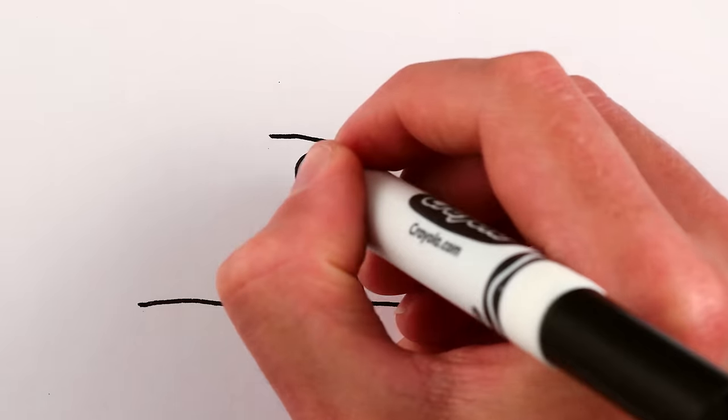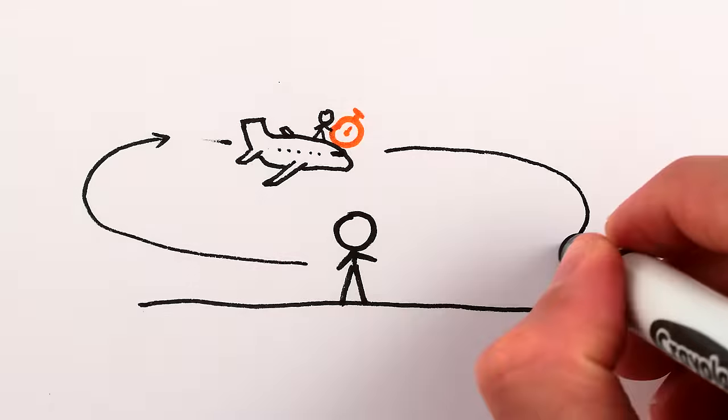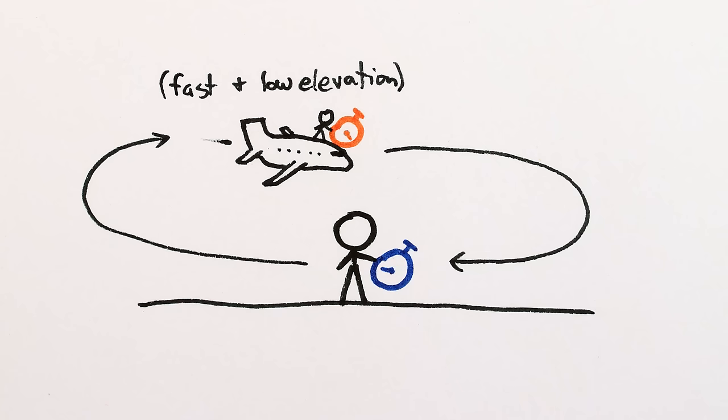And indeed, this is exactly what happens when you send an atomic clock flying around in an airplane. It records less time as having passed than a twin atomic clock that stays on the ground.